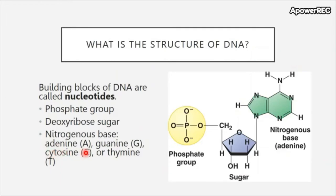The first base is adenine, abbreviated as A. The next is guanine, abbreviated as G. Then cytosine, abbreviated as C, and thymine, abbreviated as T.